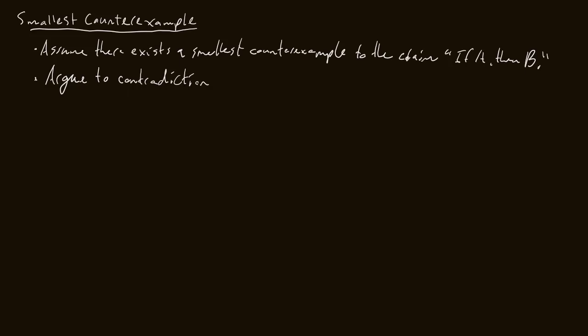Now this all seems a bit more complicated and tedious, but it actually proves to be pretty useful. Let's look at this fact that we've mentioned before: every integer is even or odd. We know that this is true — think of an integer right now, it's even or odd. You can't think of a counterexample because there are no counterexamples. This is true, but we haven't proved it yet.